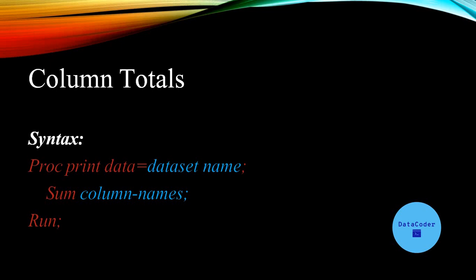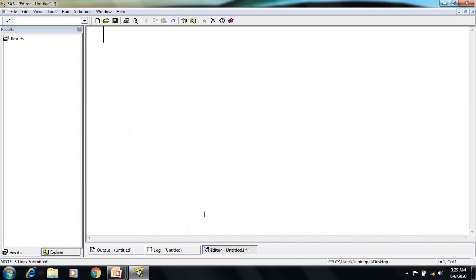To get the column totals in a list report we need to use the SUM statement. In the SUM statement we can specify the column name for which column we want the total values. If I want the total for a single column I can specify that column name, but if I want totals for multiple columns I can specify all the column names in the SUM statement. Let's go to SAS and see an example.